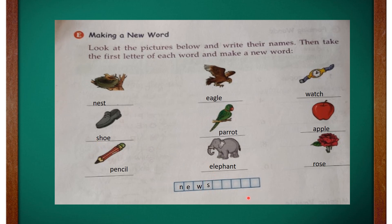The first letter of shoe is S — write down S here. The first letter of parrot is P — write down P here. The first letter of apple is A — write down A here. The first letter of pencil is P — write down P here again. The first letter of elephant is E — write down E here. And the first letter of rose is R — write down R here. So let's spell out the new word we got: N-E-W-S-P-A-P-E-R — it's nothing but a newspaper!